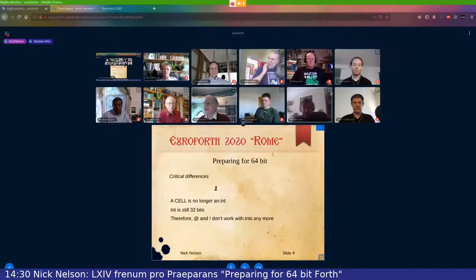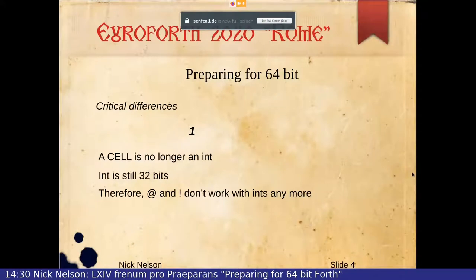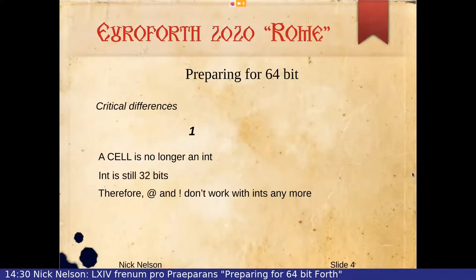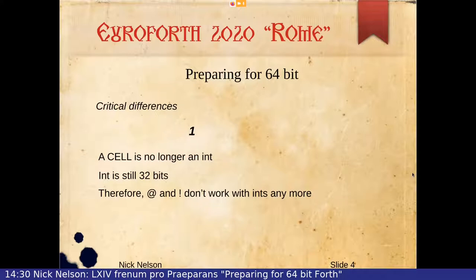So we tried to look for critical differences. The real big gotcha when you go to 64-bit is that an int is no longer the same size as a cell. Ints remain as 32 bits, and cells are now 64 bits. So where in the past you used fetch and store to work on an int, that no longer works.